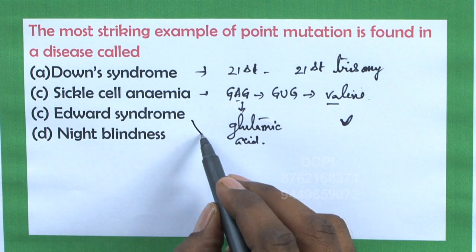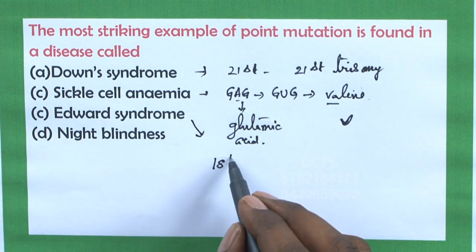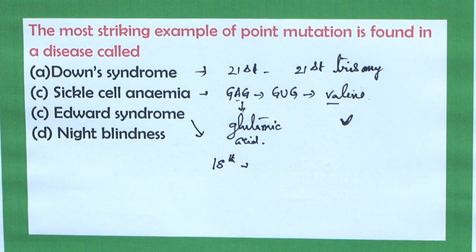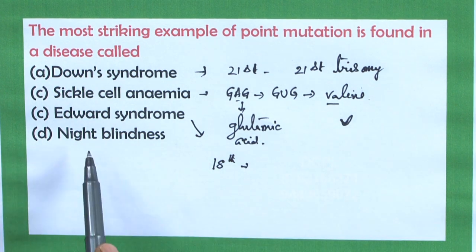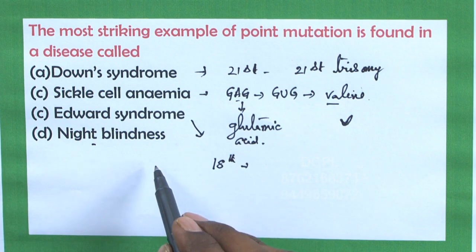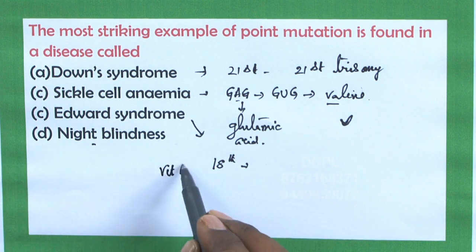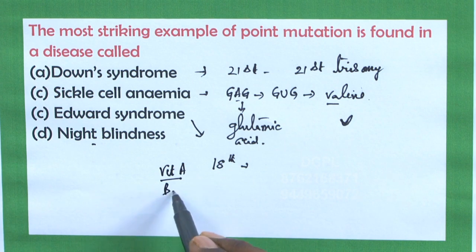Option C is Edwards syndrome. Edwards syndrome is associated with an extra chromosome present at the 18th pair of autosomes, and newborn babies suffer from heart disorders. Option D is night blindness — night blindness is a physiological disorder wherein vision is impaired during night time due to deficiency of vitamin A, that is beta-carotene.